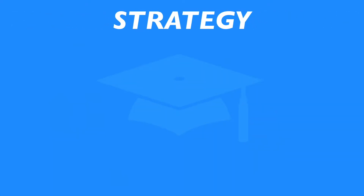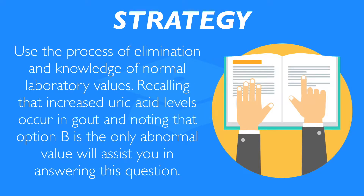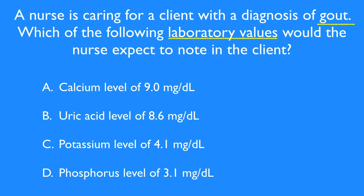As a strategy to answer this question, use the process of elimination and knowledge of normal laboratory values. Recalling that increased uric acid levels occur in gout, and noting that option B is the only abnormal value, will assist you in answering this question. The expected lab values for uric acid in a client with a diagnosis of gout are going to be elevated, making option B your only possible answer. Note that these values are elevated since normal uric acid levels range from 2.5 to 8 mg per deciliter.